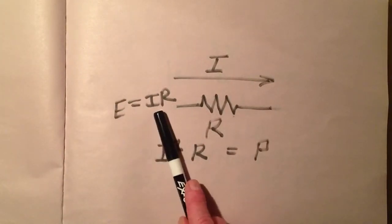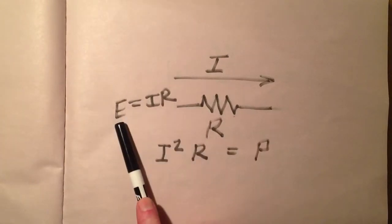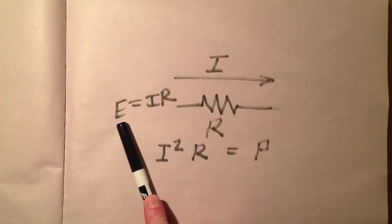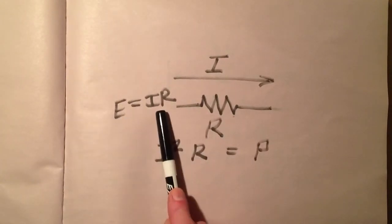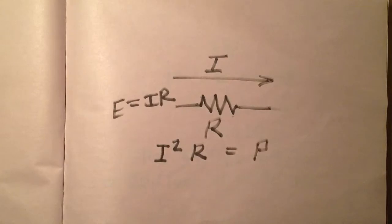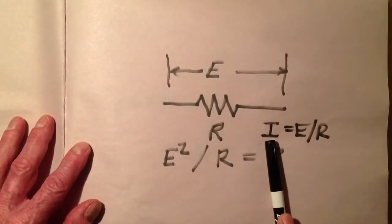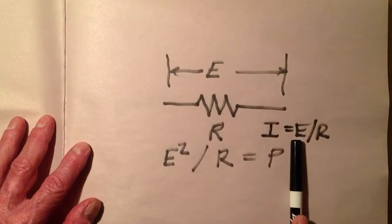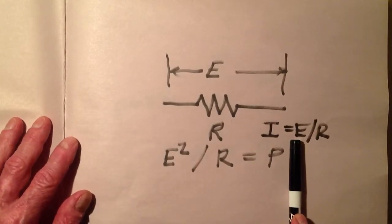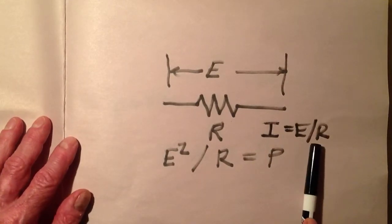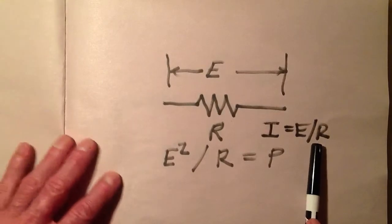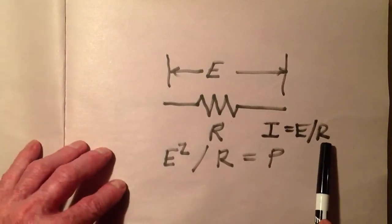Remember Ohm's Law: voltage equals current times resistance. Voltage in volts equals current in amps times resistance in ohms, or current in amps equals voltage in volts divided by resistance in ohms.